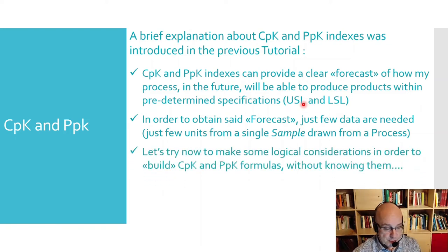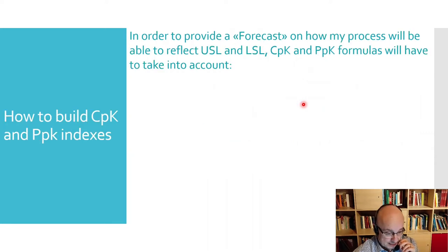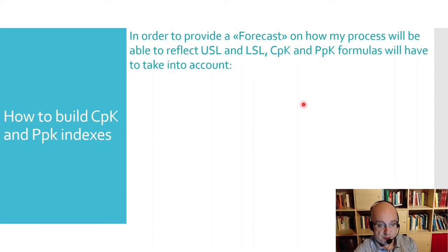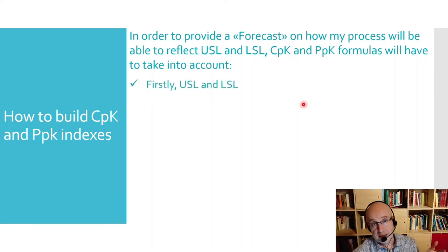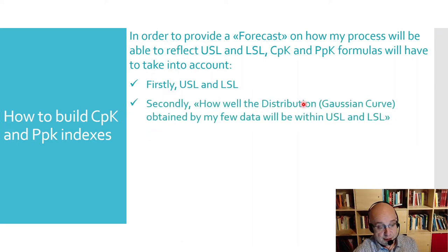Let's now make some logical considerations in order to build the CPK and PPK formulas, rather than just showing them immediately. In order to provide a forecast on how my process will be able to reflect USL and LSL, the two indexes need formulas that take into account USL and LSL. But not only that — the formulas will also have to account for how well the distribution, which is the Gaussian curve obtained from my few data, fits within USL and LSL.